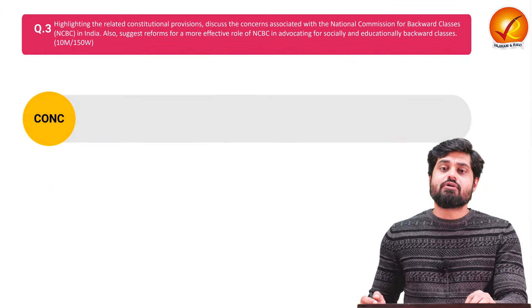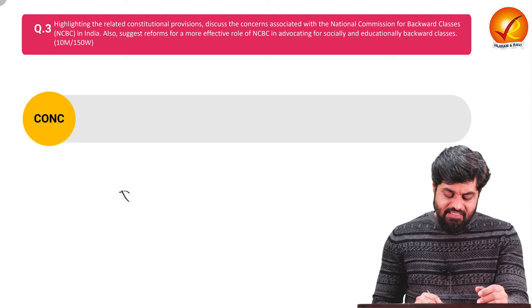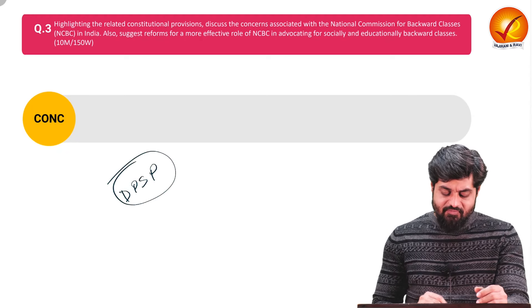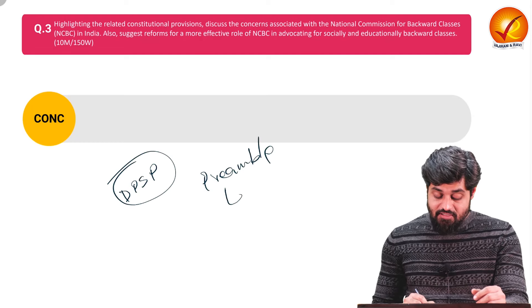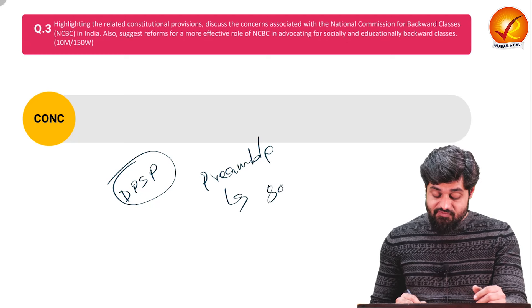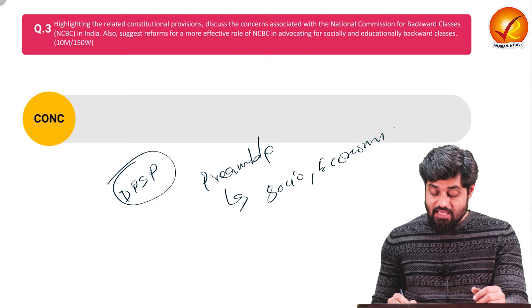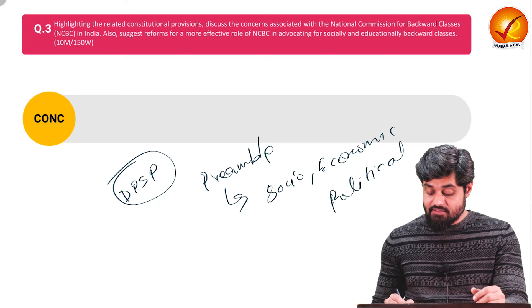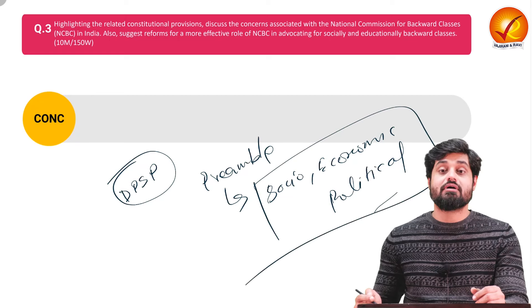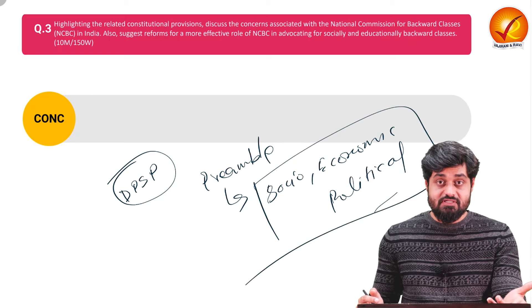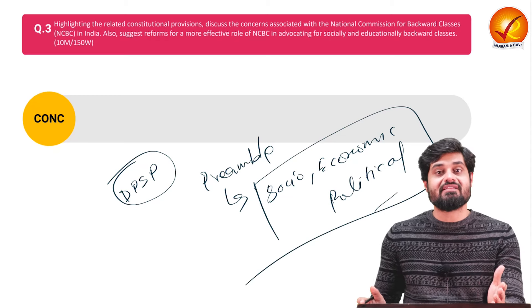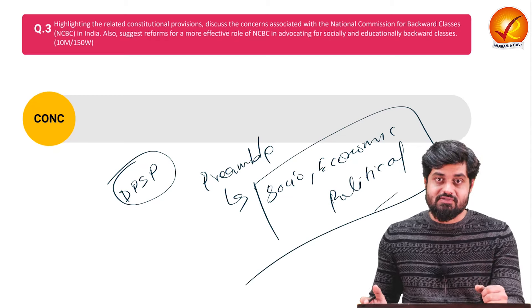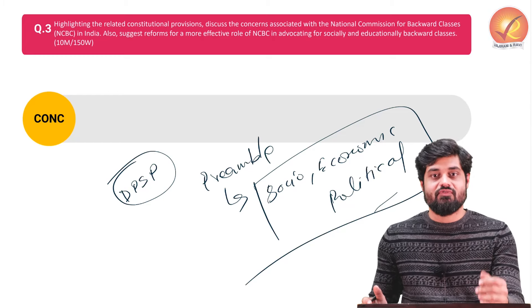For the conclusion, we can reference the Directive Principles of State Policy and the Preamble, which promises to ensure justice of a social, economic, and political nature. We can link these progressive constitutional provisions with the functioning of the National Commission for Backward Classes. That's all from my side in this discussion — thanks for watching.